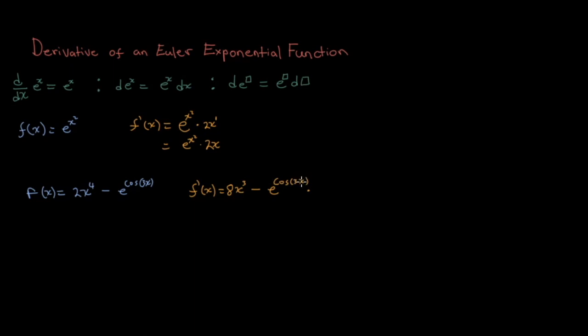And as we know, the derivative of a cos function is a sine function, or a negative sine I should say. So times negative sine 3x, and then times the derivative of whatever is in the bracket here, times 3.